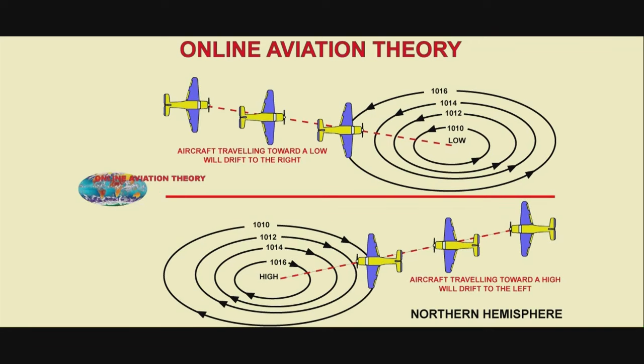In the Northern Hemisphere, the flow of air is anti-clockwise around a low-pressure system and clockwise around a high.